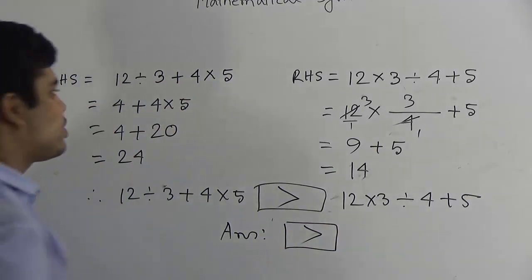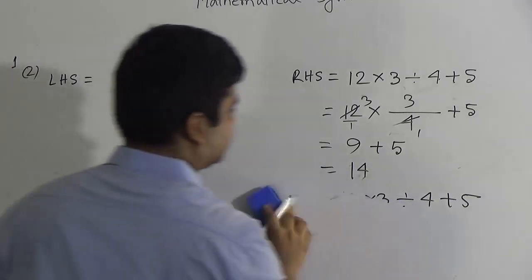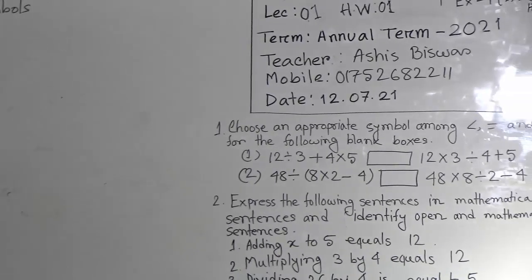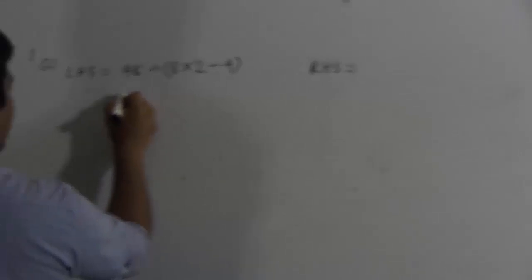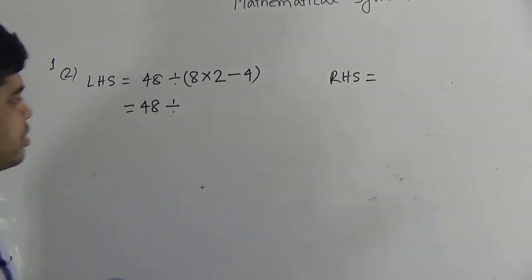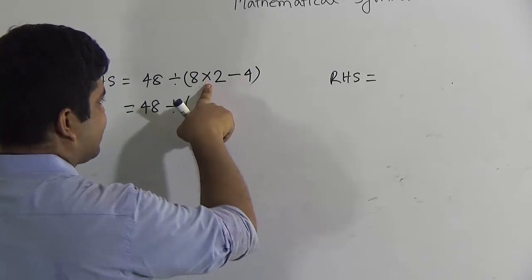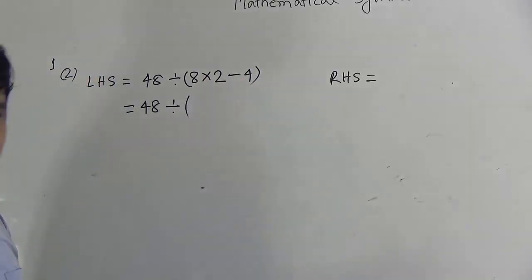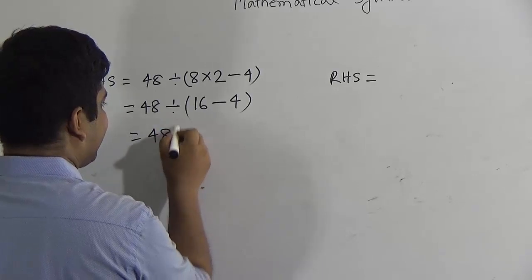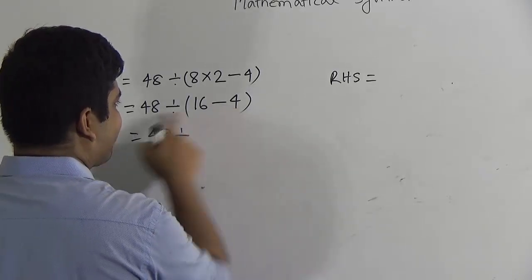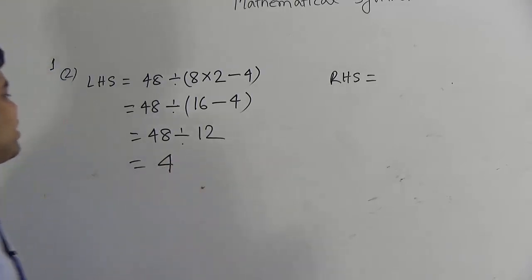In a similar way we shall solve question number 2. Left hand side is 48 divided by 8 multiplied 2 minus 4. At first we do the work of the bracket: inside the bracket there are multiplication and minus signs, so we do multiplication first: 8 times 2 is 16, then minus 4. We subtract 4 from 16 to get 12. We then divide 48 by 12 to get 4. So the left hand side is 4.